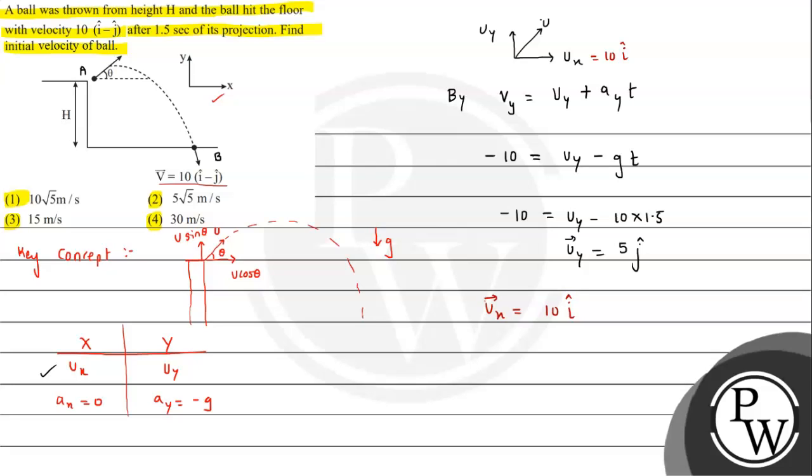Now simply, u will be under root of u of x square plus u of y square. It will be just 100 - ux is 10 squared which is 100 - plus 25, so it is 125. Finally, u ki value is 5 root 5 meter per second.